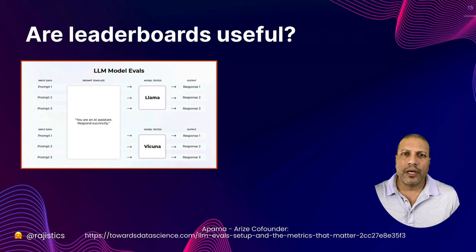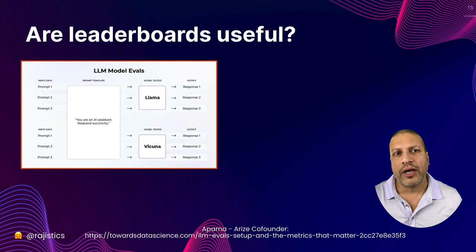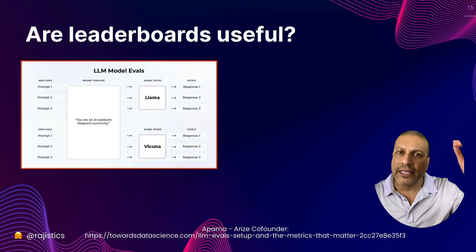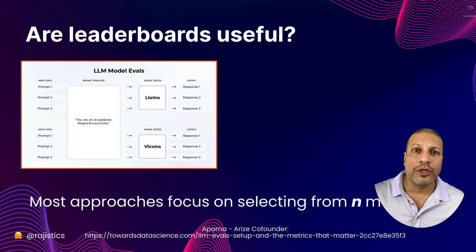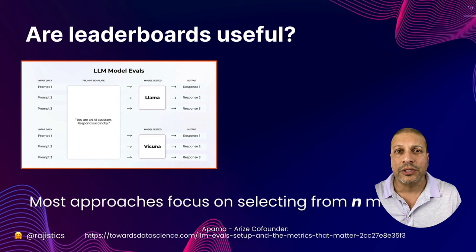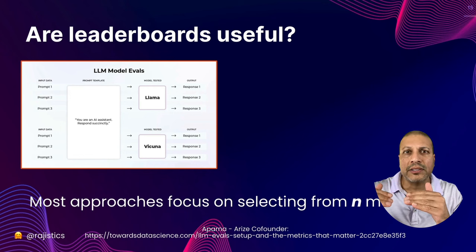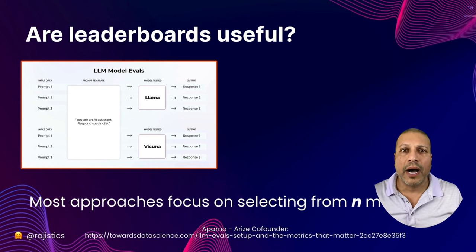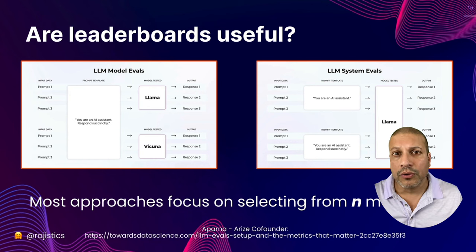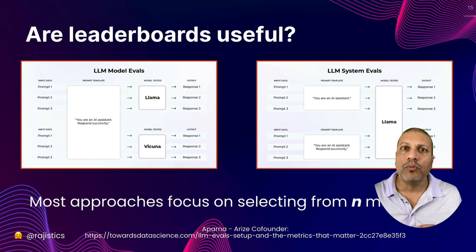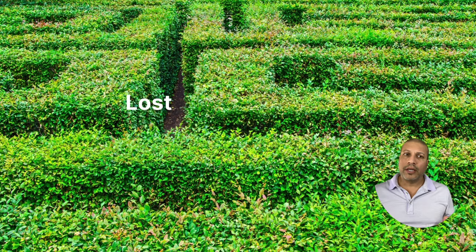Aparna over at Aries wrote a great article about how a lot of our evaluation thinking is really about comparing many language models to figure out which is best. For academia and model developers trying to show how they rank against thousands of other models, that's the game they're playing. But for most of us working on projects, that's not what we want.